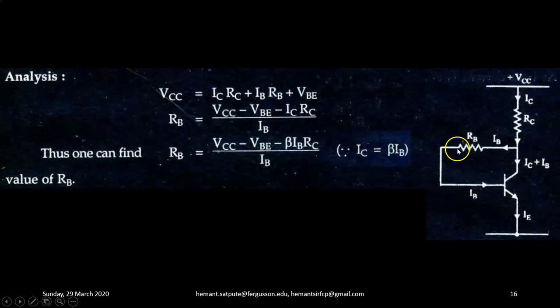Hence, we can write Kirchhoff's voltage law equation VCC equals IC RC plus IB RB plus VBE. Here the left hand side represents the energy supplied and right hand side represents the energy utilized. Some part of this energy given by VCC is used to develop voltage drop across RC. Some part is used to develop the voltage drop across RB, and some part is used to develop the base to emitter voltage drop across base emitter junction. Hence, VCC equals IC RC plus IB RB plus VBE.